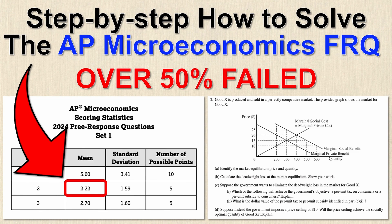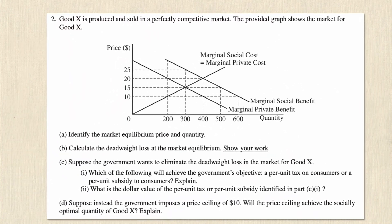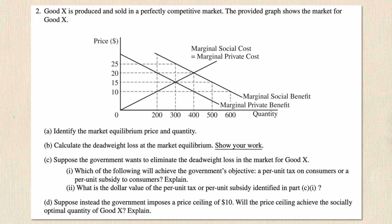Let's look at what the question is asking us. This is question two of the FRQs and it says good X is produced and sold in a perfectly competitive market. The provided graph shows the market for good X, and there are three curves on it — two benefit curves and one cost curve. This immediately tells me it's an externality problem, because there's a social benefit and a private benefit and they're not the same, so I know there's a positive externality.